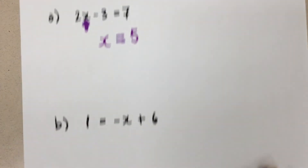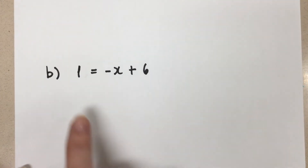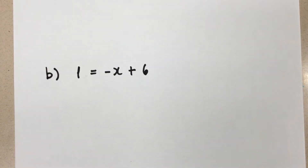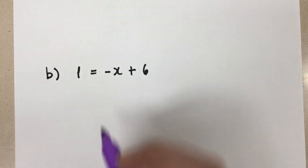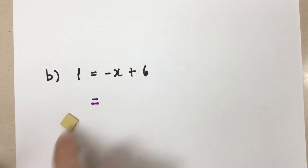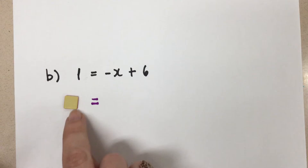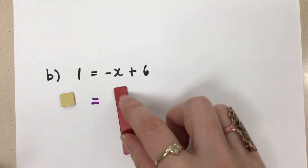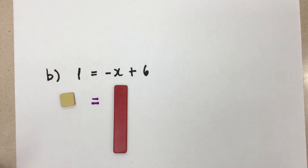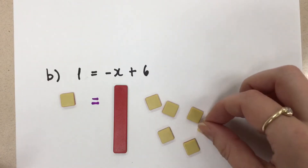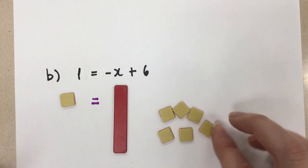Let's do the next one. Here we have positive 1 equals negative x plus 6. We'll start by getting our equal sign in the middle, then get out our algebra tiles that represent this equation. We have 1 on the left side, and on the right side we have a negative x and positive 6.